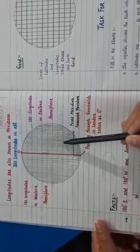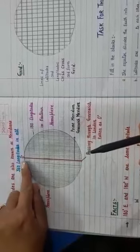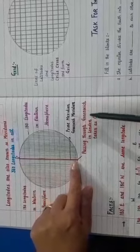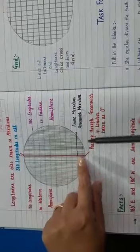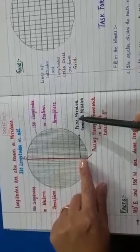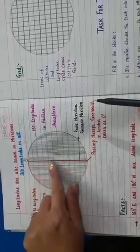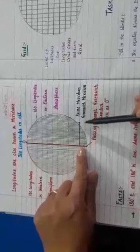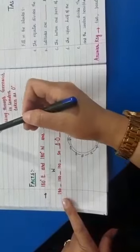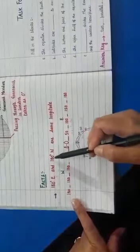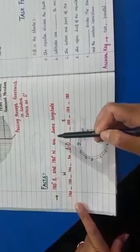360 longitudes we have on the globe. This 0 degree passing through Greenwich in London is taken as 0. This is called the Prime Meridian. As it is passing through Greenwich, it is also called the Greenwich Meridian.